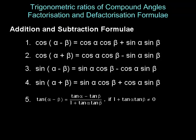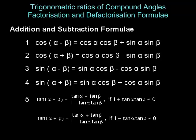Number five, tan of alpha minus beta is tan alpha minus tan beta upon one plus tan alpha tan beta, provided the denominator is not equal to zero. Number six, tan of alpha plus beta is tan alpha plus tan beta upon one minus tan alpha tan beta, provided the denominator is not equal to zero.